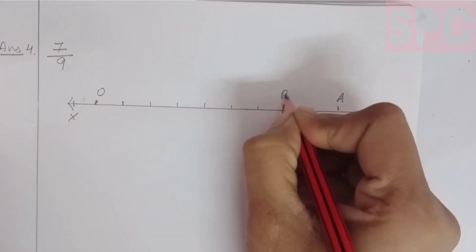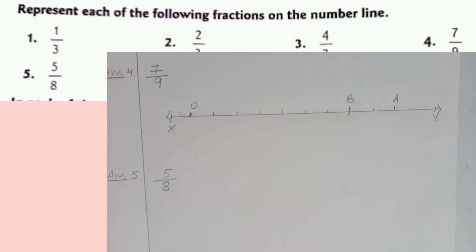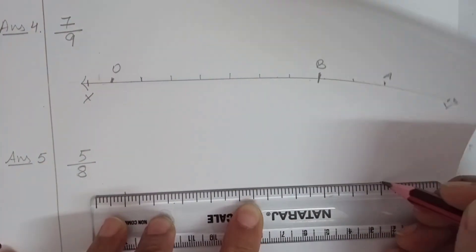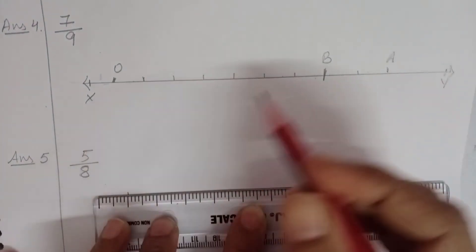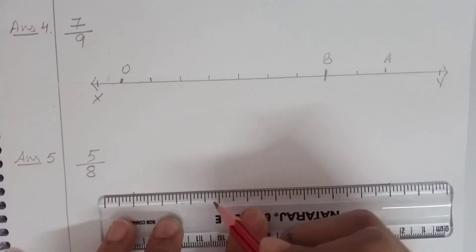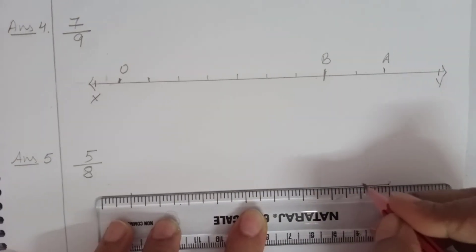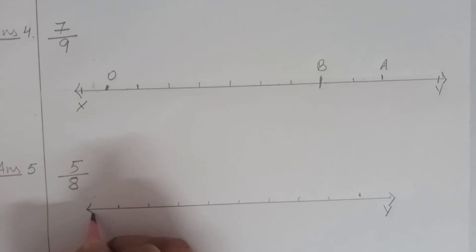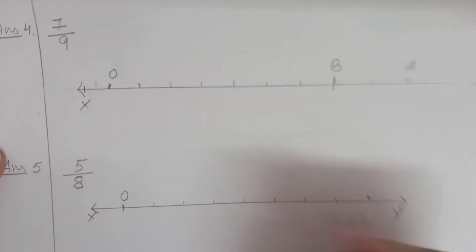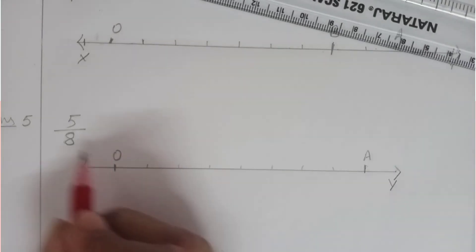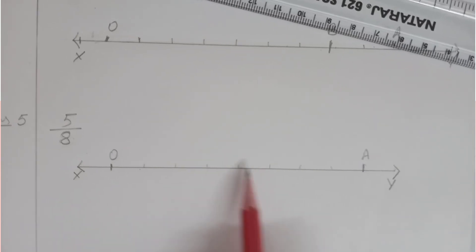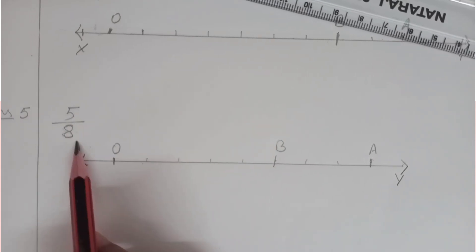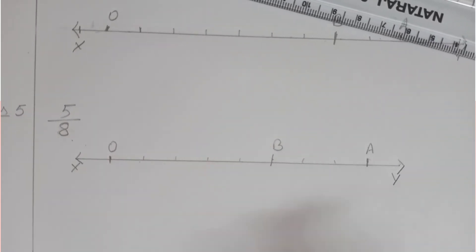Let's move on to question number 5, which is 5 by 8. Again, we will take a number line XY. On this number line, we will take two points O and A which will be 8 units apart because the denominator is 8. We will divide OA into 8 equal parts: first part, second part, third part, fourth, fifth, sixth, seventh and eighth. Out of 8 equal parts, the numerator is 5, so at the end of the fifth part, we will mark this point as B. Therefore, OB will represent the fraction 5 by 8 on this number line.